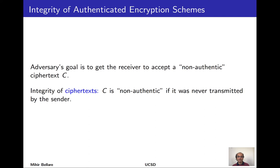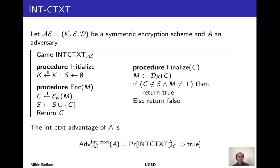Integrity of ciphertext works as follows: imagine a sender transmitting ciphertext to a receiver, and the receiver accepting those ciphertexts. The adversary's goal is to get the receiver to accept a ciphertext even though the sender never sent it — in other words, it's non-authentic. We don't worry about what the ciphertext encrypts; if the ciphertext itself was never actually transmitted by the sender and the receiver accepts it, we have a problem.